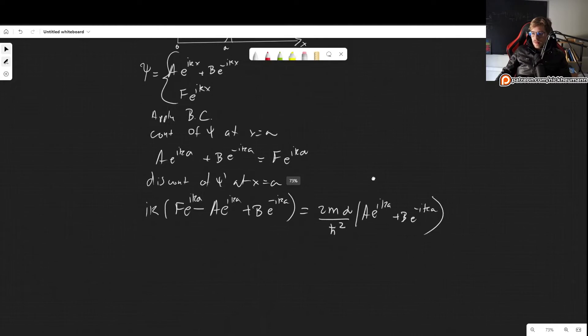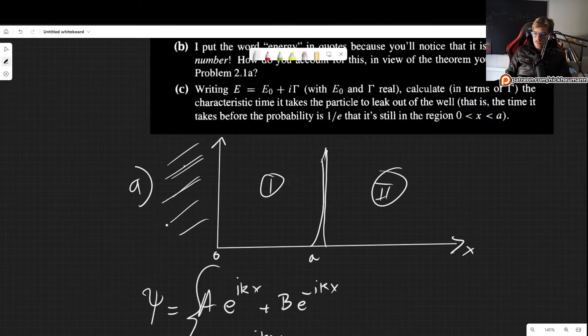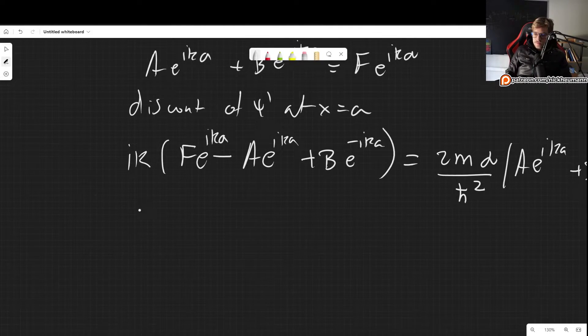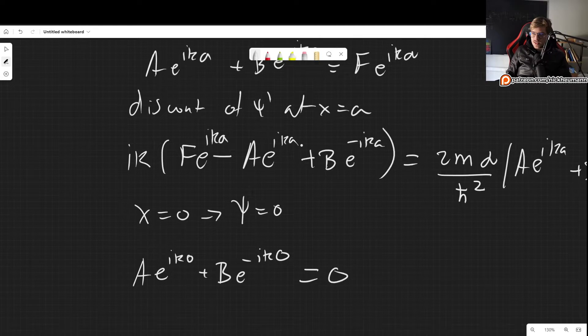And this is the same as 2m alpha divided by h bar squared times our wave function psi evaluated at a. And here we can either plug in this or this. We know that they are the same. Let's go for A e to the i k a plus B e to the minus i k a. You could go for either one of them. But I know that our goal later on is going to be to eliminate F. So eliminating right away is just a good place to start. So this is our condition number 2. We have 1, 2,